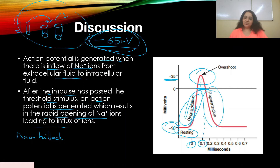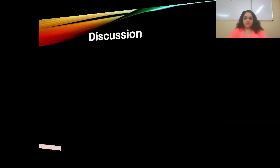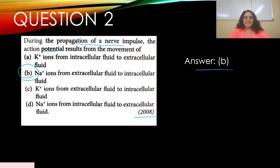Sodium ions entering the nerve fiber make it positive — this is the action potential. It is generated when the voltage crosses the threshold stimulus. During propagation of a nerve impulse, the action potential results from the movement of sodium ions from extracellular fluid to intracellular fluid.